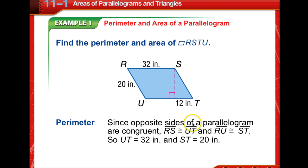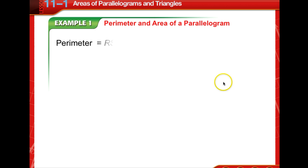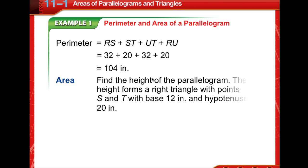Since opposite sides of a parallelogram are congruent, we know that RS is congruent to UT and that RU is congruent to ST. UT is 32 and ST is 20. The perimeter, if you add all those up, 104 inches.